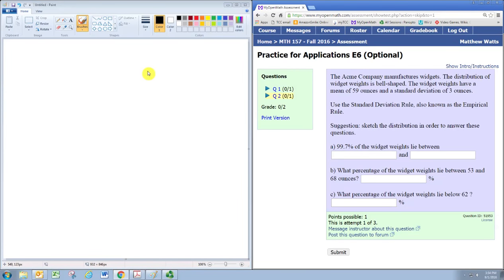In this video we'll see how to use the empirical rule in a sketch of the normal distribution to answer some questions about normally distributed data. The Acme company manufactures widgets. The distribution of widgets is bell-shaped. The widget weights have a mean of 59 ounces and a standard deviation of 3 ounces.